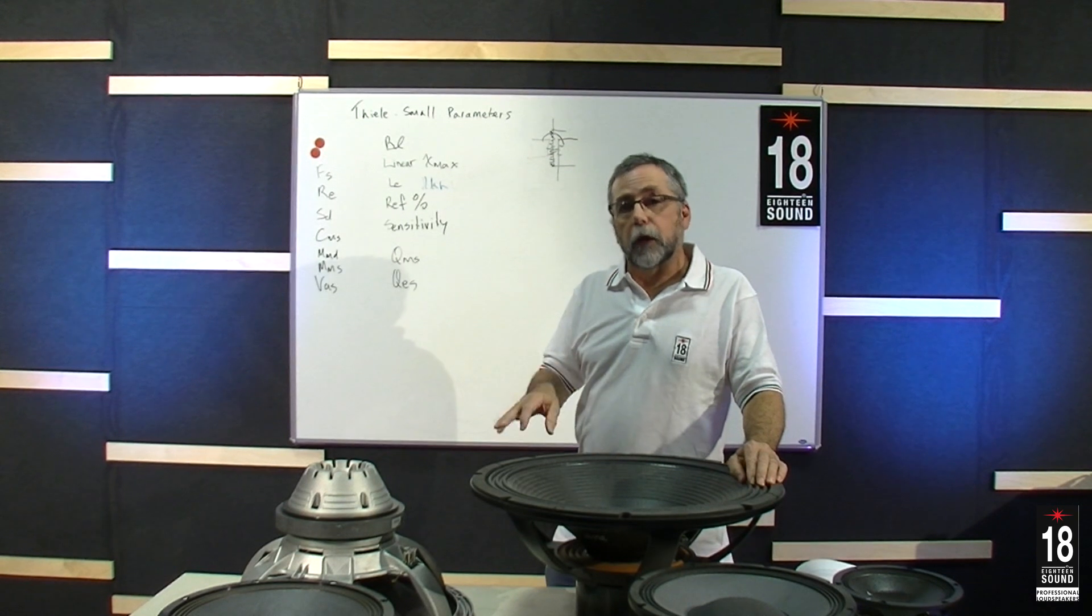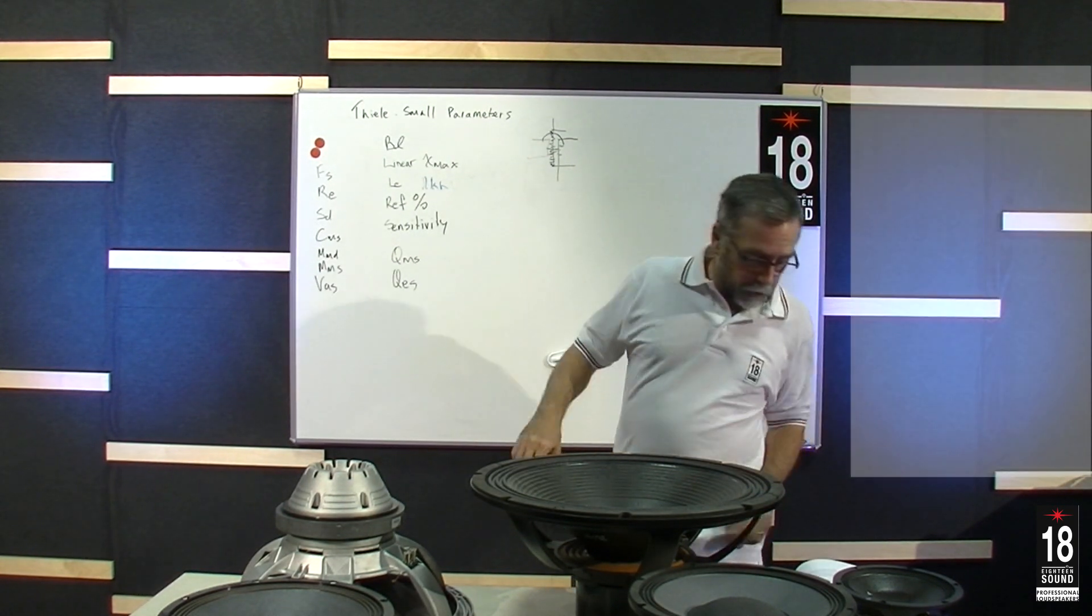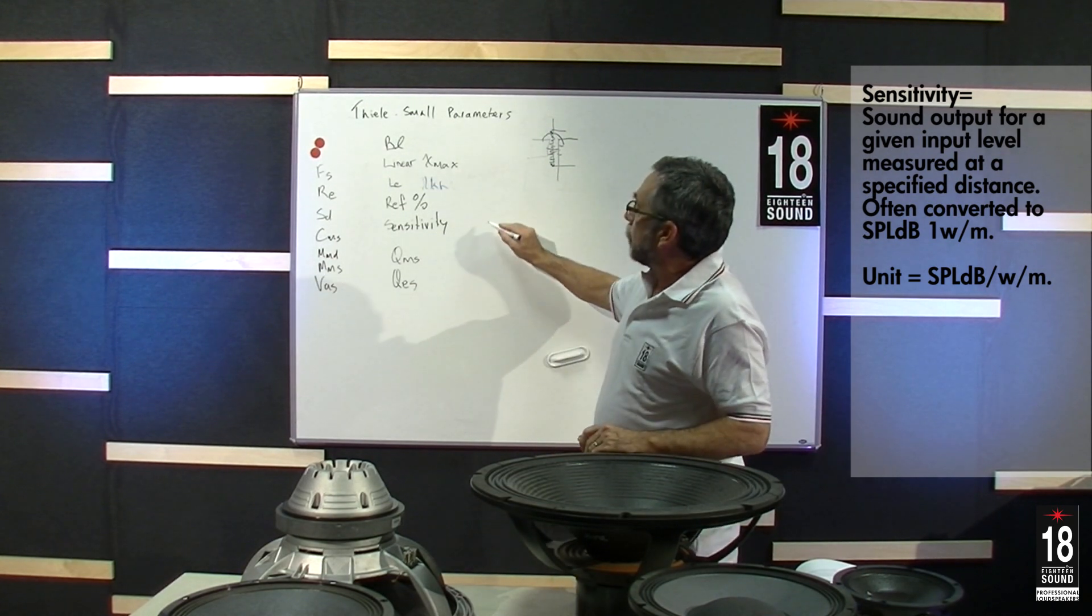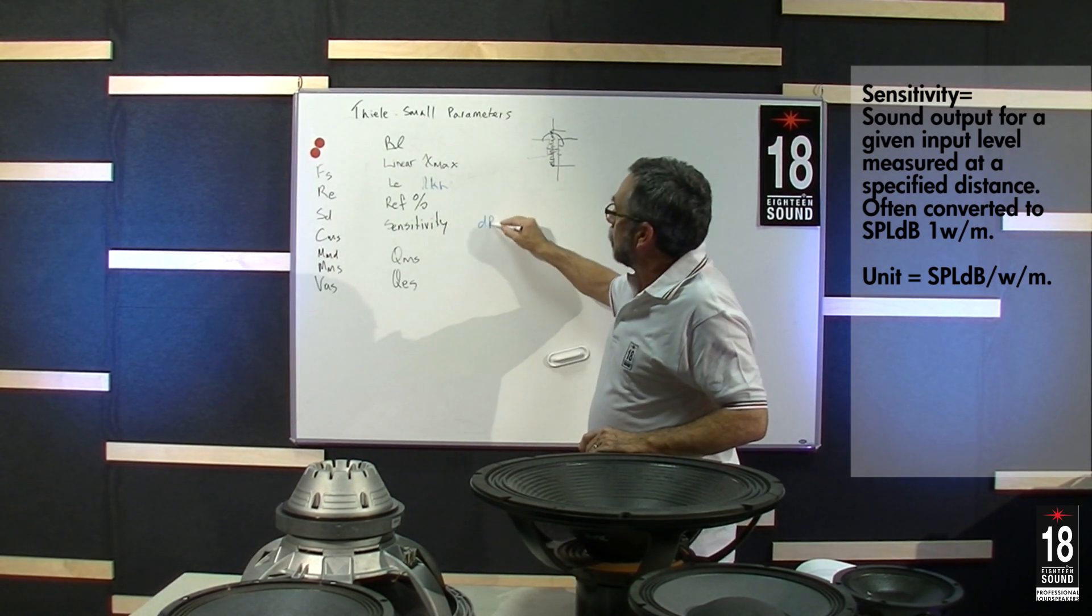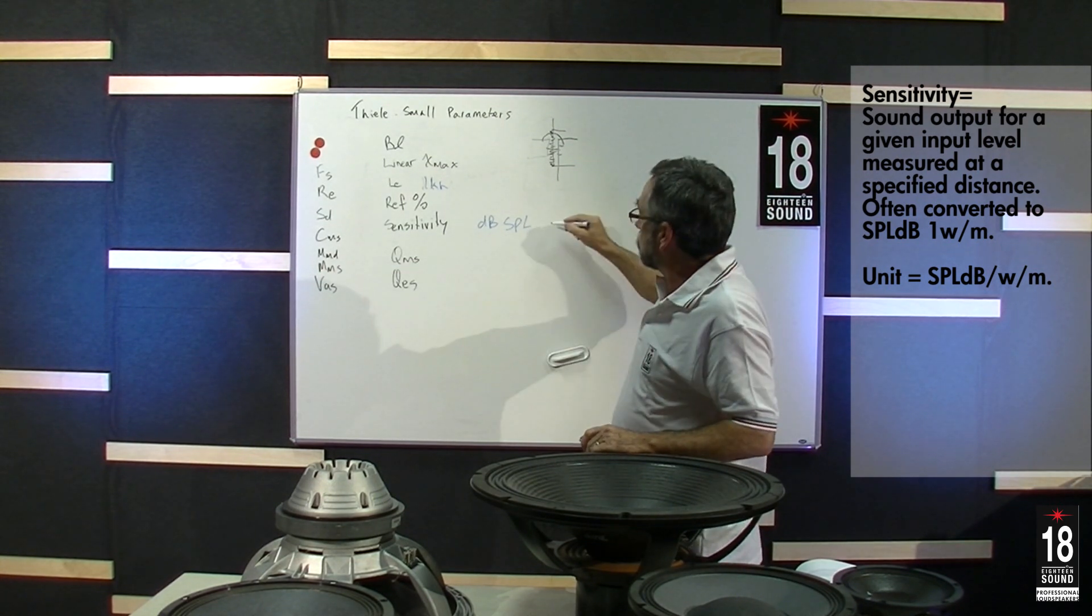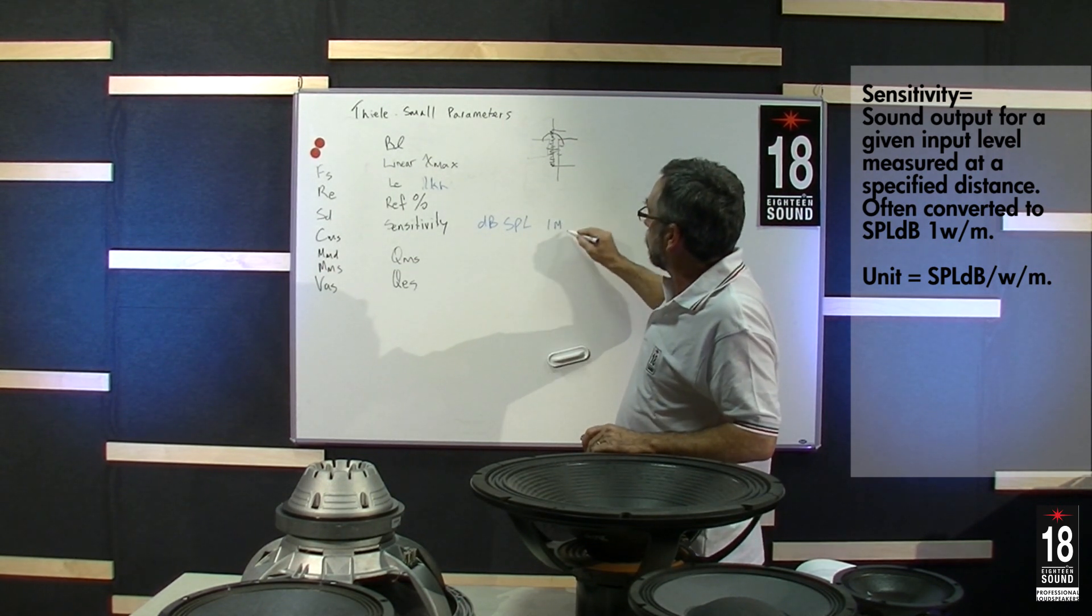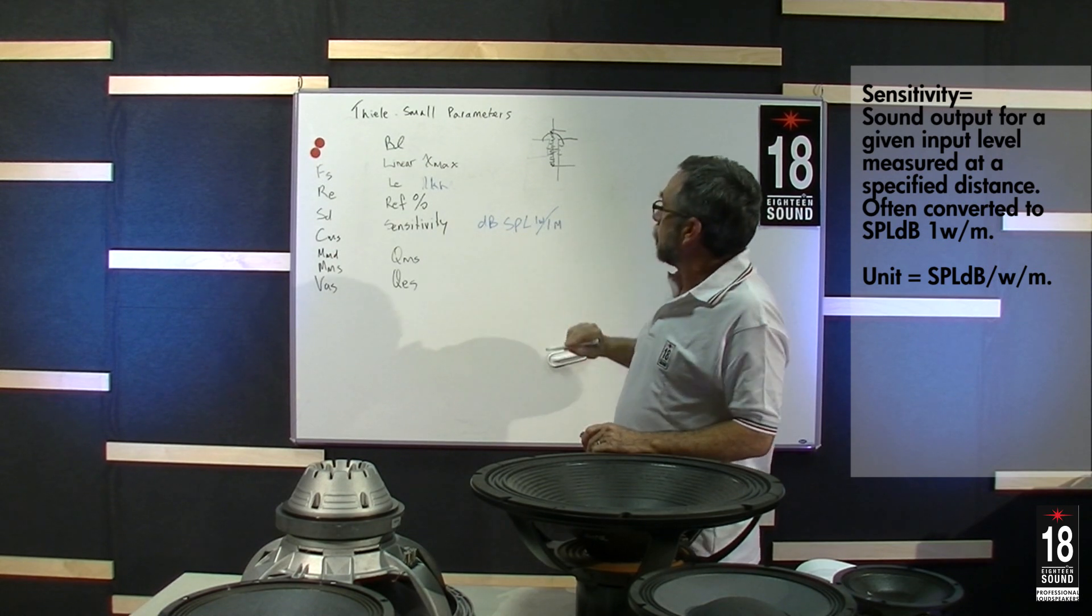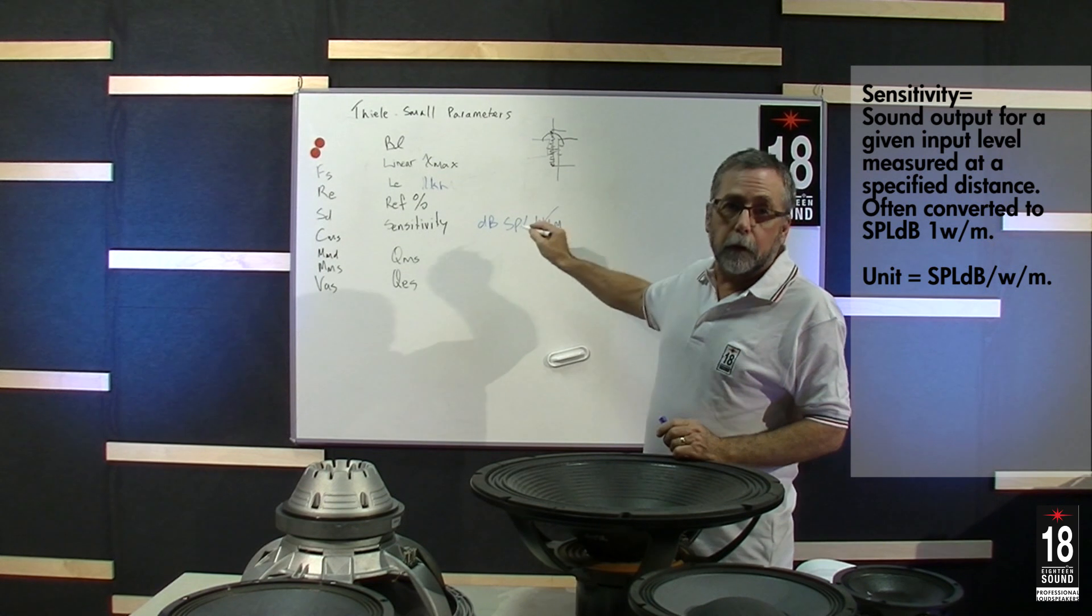Sensitivity should be written as a number of dB SPL. We want to define a distance, typically one meter, and power, one watt. So you'll see SPL, watt, meter.